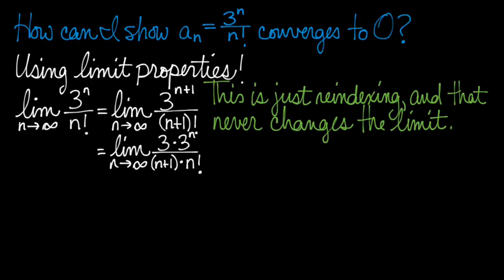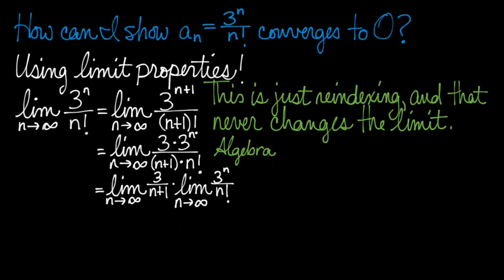Next, I get out some clever algebra. I write 3^(n+1) as 3 times 3^n. I rewrite (n+1) factorial as (n+1) times n factorial.